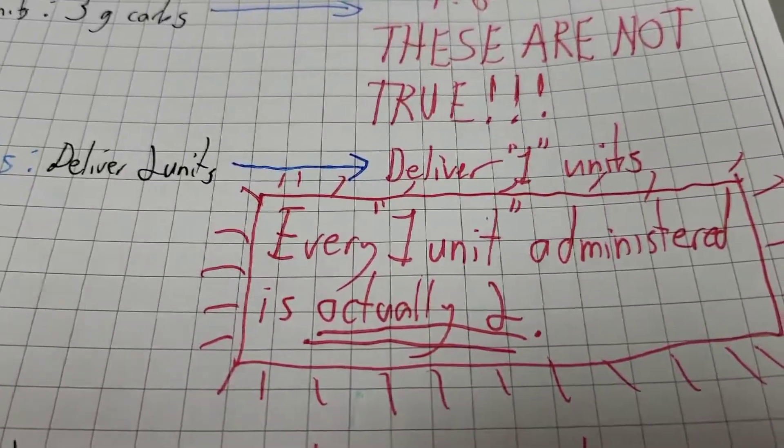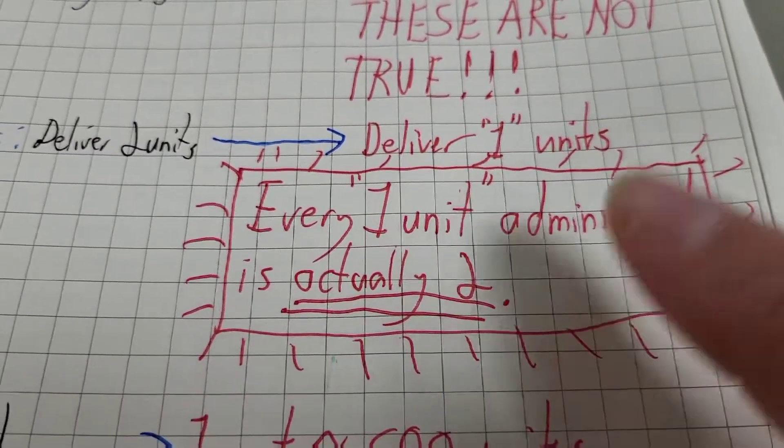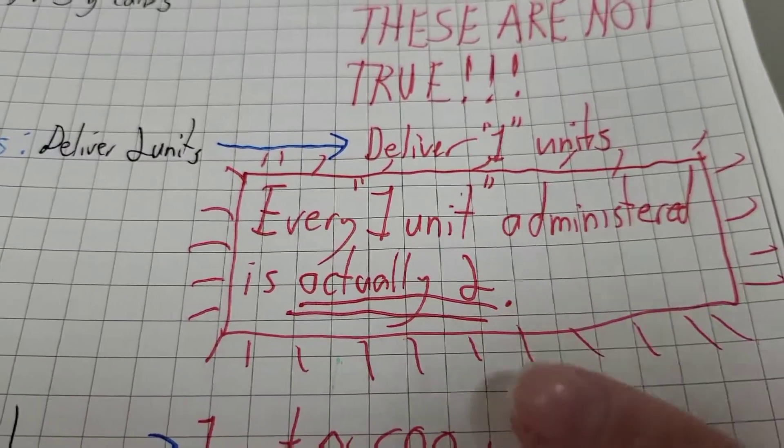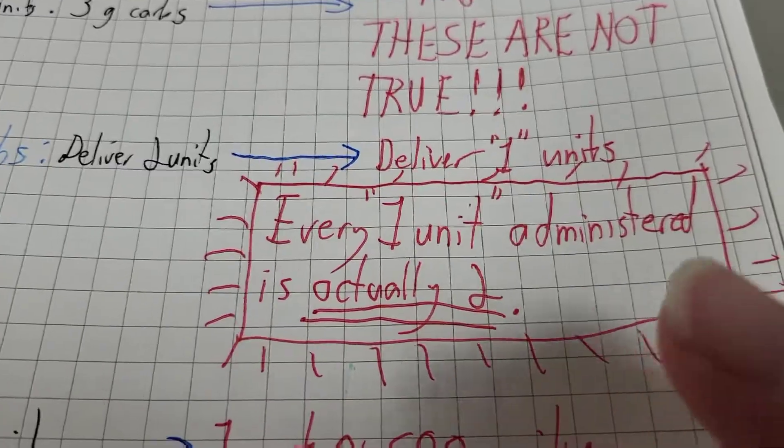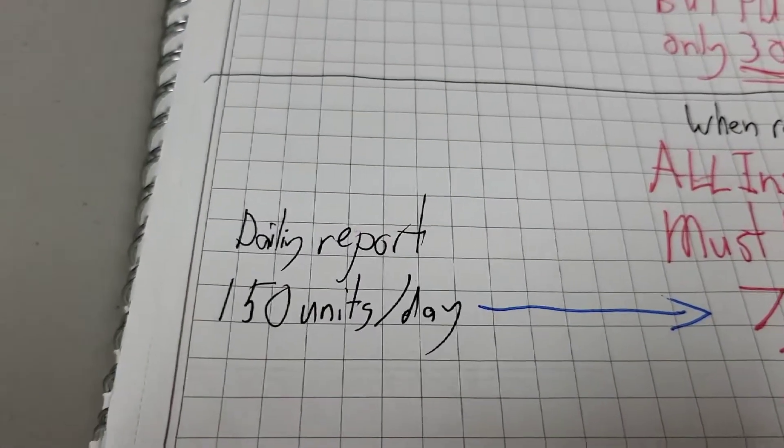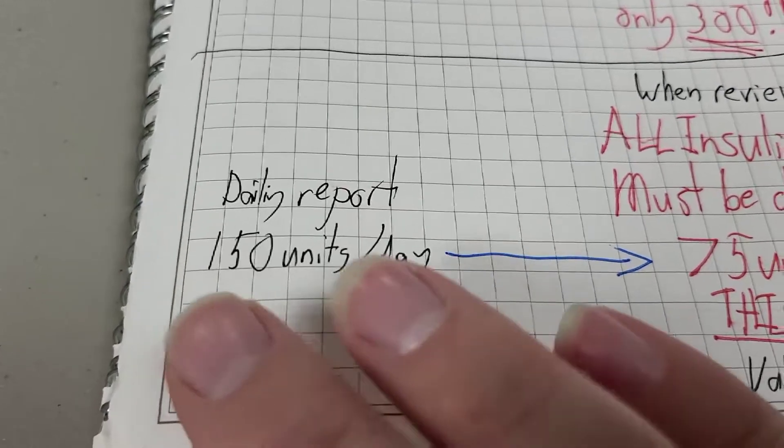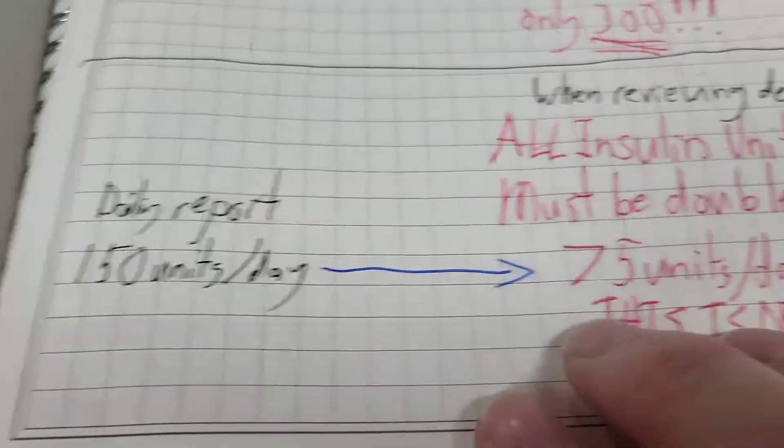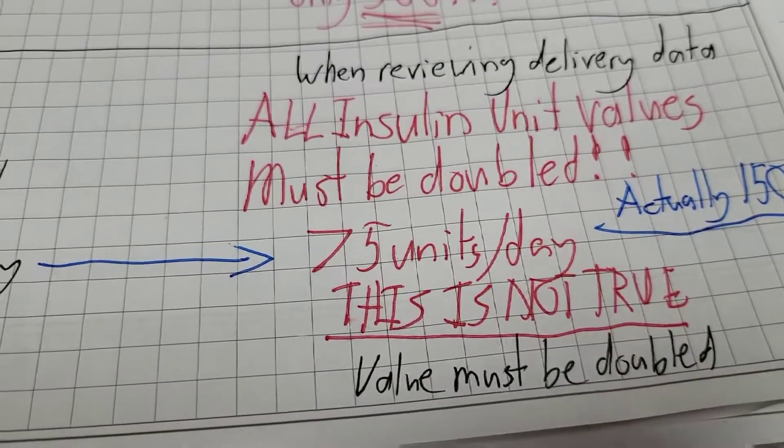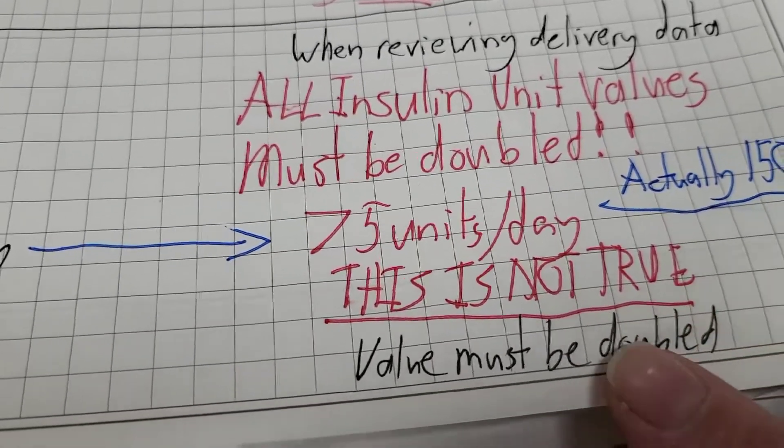This is very important. Every one unit administered by a pump containing U200 is actually two units. As I demonstrated, I use about 150 units a day, but the pump reports that I use about 75 units per day. That's not accurate. That value needs to be doubled.